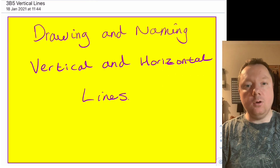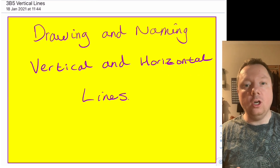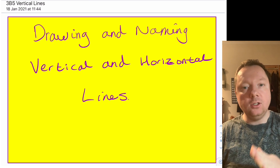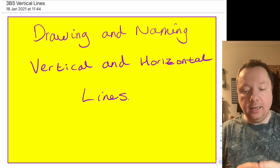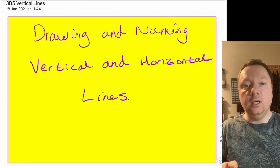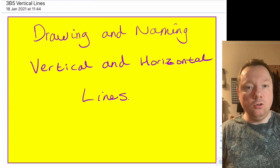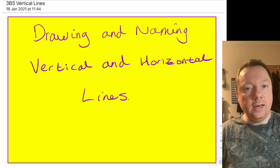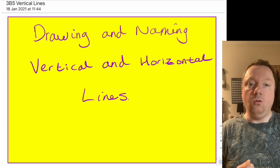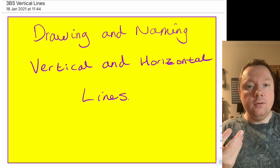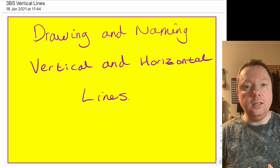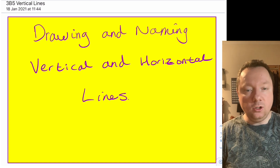Mr Clown here from Clown and Maths. Today we're going to be following on our work on drawing straight lines. This time, instead of drawing ones which are at a slope, we're going to be drawing straight lines either vertical, which is straight up and down, or horizontal, which is straight across. We'll look at how to draw them from the equation of the line, and also how to name the equation from the picture.